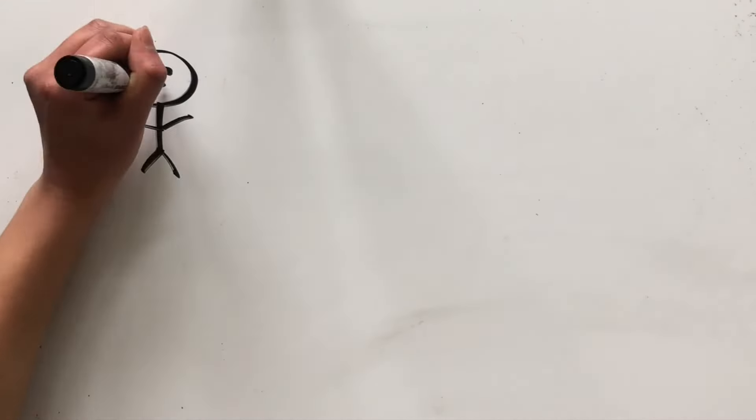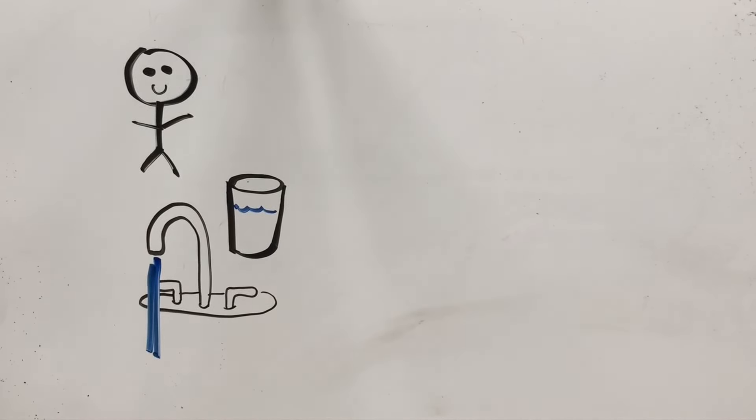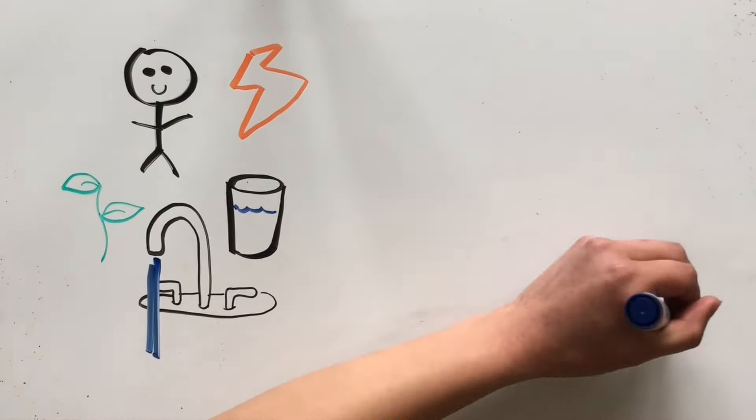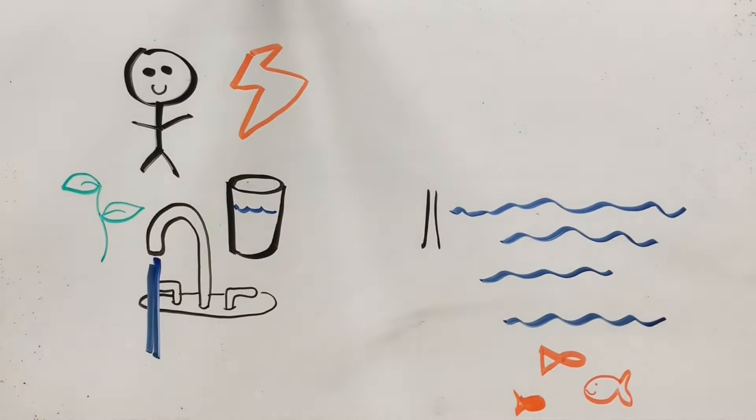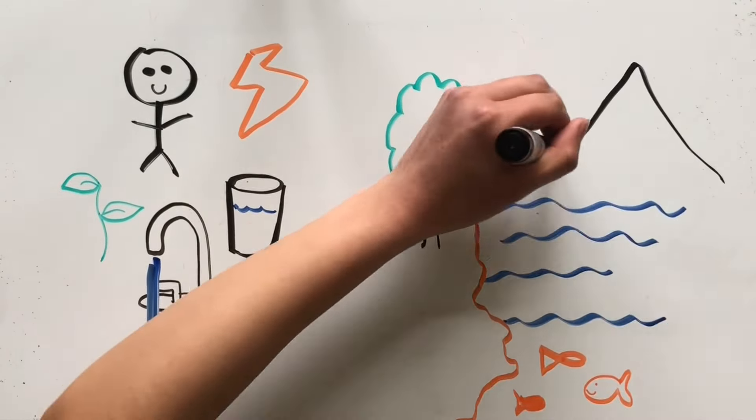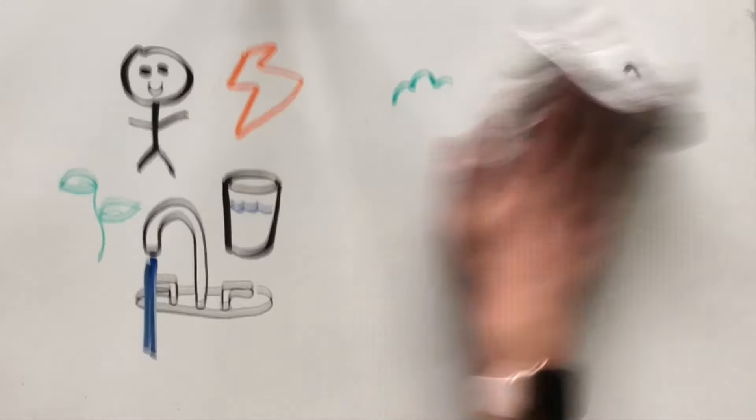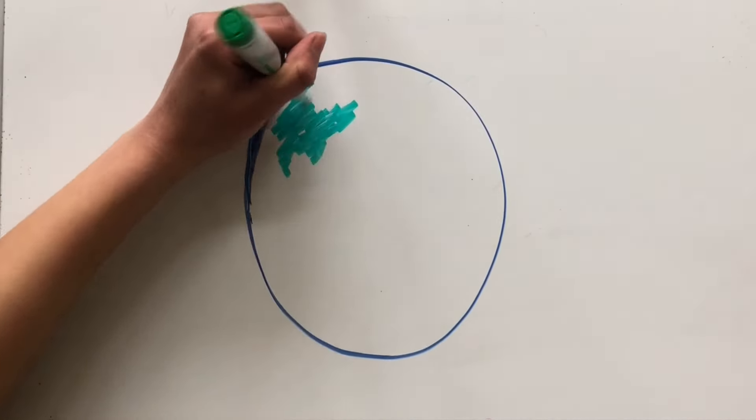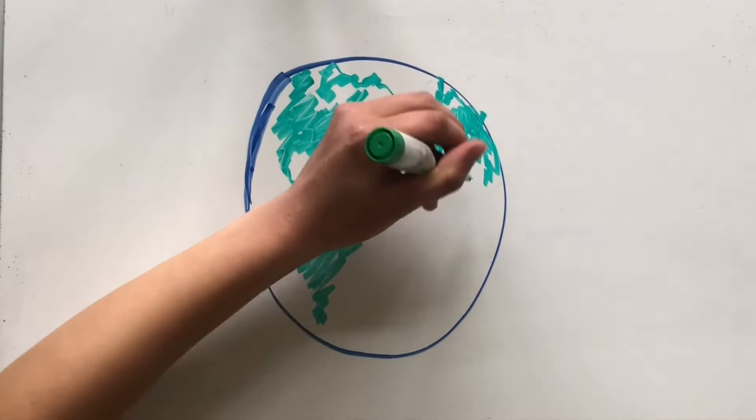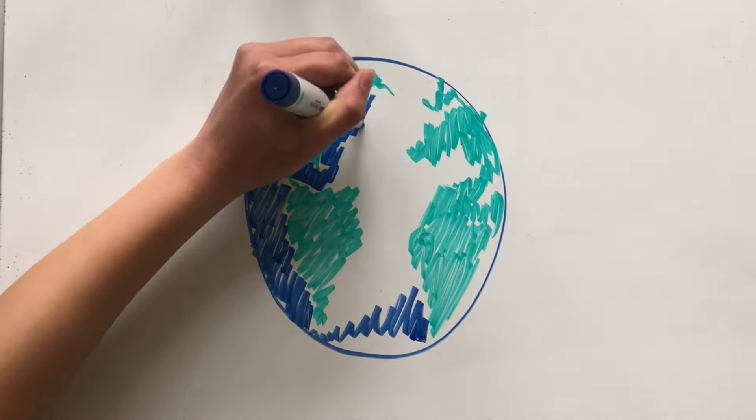Yes, we need water to survive, to drink, bathe in, generate electricity, grow crops, and so much more. But we're not the only ones. Our plants, animals, and environment all need this water to survive too. So it's important to remember that we're not the only ones on the planet. If we as humans can come together to save our water supply by reducing our pollution and conserving our water, then the Earth can be a healthy and happier place. Thank you for listening, and I will see you again next time.